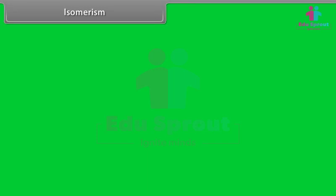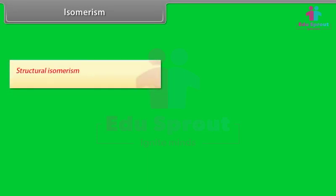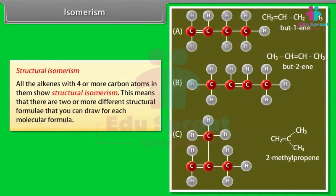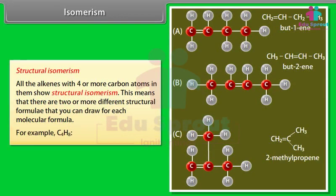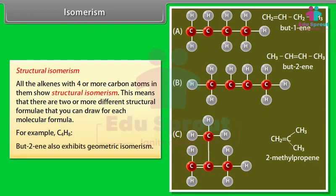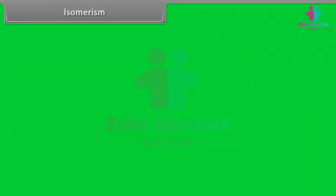Structural Isomerism: All alkenes with four or more carbon atoms show structural isomerism, meaning there are two or more different structural formulae for each molecular formula. For example, with C4H8, it is possible to draw three structural isomers. There is, however, another isomer: but-2-ene also exhibits geometric isomerism.